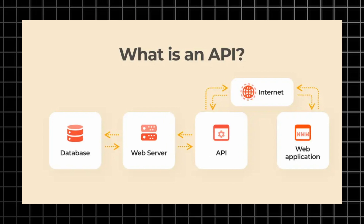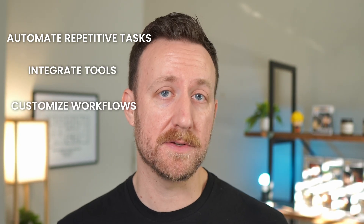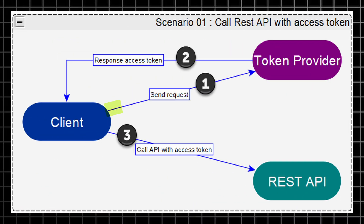Another thing to spend some time learning is REST APIs. An API is an application programming interface — it's a way for software to communicate with each other. APIs let you automate repetitive tasks, integrate tools, and customize workflows, which helps you build more scalable solutions. You authenticate using a token, then send requests like refreshing a dataset to an API endpoint and process the response to confirm the action or retrieve data. You could do this with tools like Python. It's worth understanding because you may run into situations where an API could be helpful.